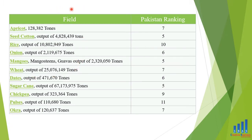Agriculture کے حوالے سے پاکستان کی world ranking دیکھتے ہیں۔ Apricot میں پاکستان 7th rank پر ہے۔ Rice میں 10th پر، onion میں 6th پر، mango میں 5th پر، اور pulses میں 11th پر ہے۔